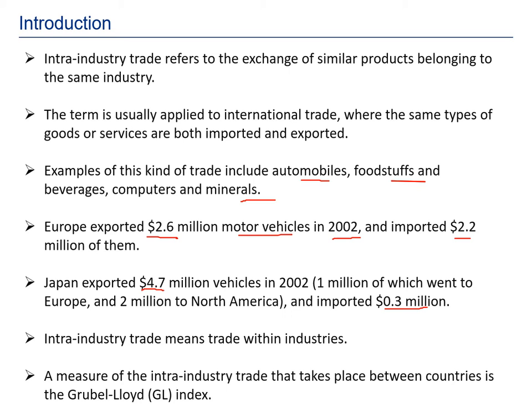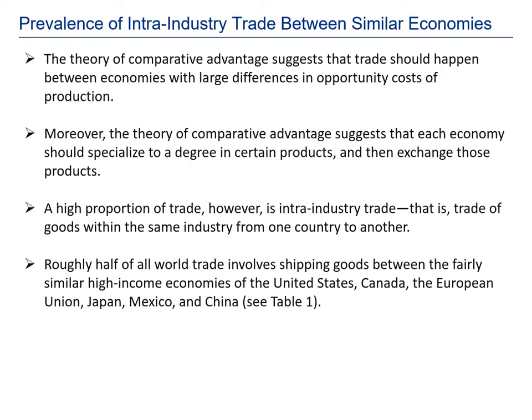To measure intra-industry trade we have an index called the Grubel-Lloyd Index, popularly known as the GL Index. Regarding the prevalence of intra-industry trade between similar economies, the theory of comparative cost advantage suggests that economies should trade when the opportunity cost difference in production is large.